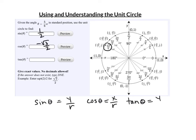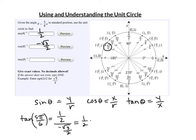The tangent of theta is y over x. So for 5π/6, I put y on top — that's 1/2 — over x, which is negative root 3 over 2. So that's 1/2 divided by negative root 3 over 2. Dividing means multiplying by the reciprocal: 1/2 times 2 over negative root 3. The 2's cancel, giving 1 over negative root 3. Rationalizing and moving the negative to the top gives negative root 3 over 3.